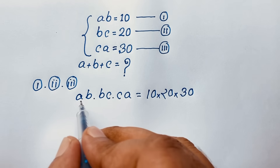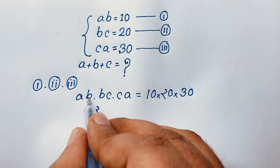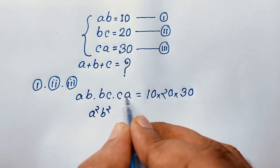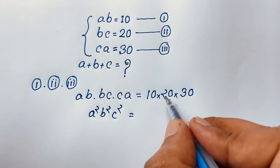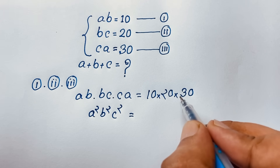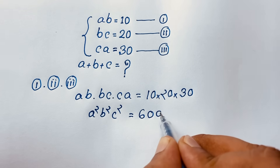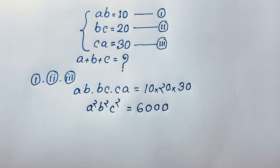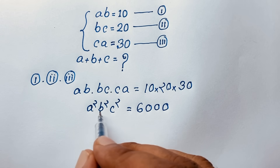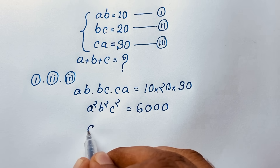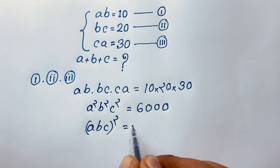Now here, A times A is A squared, B times B is B squared, and C times C is C squared. Then 2 times 1 is 2, 2 times 3 is 6, and we have 1, 2, 3, 0 — so that's 30. According to the exponential formula, the exponent is the same but the base is different, so it will be (ABC) to the power 2 is equal to 6,000.